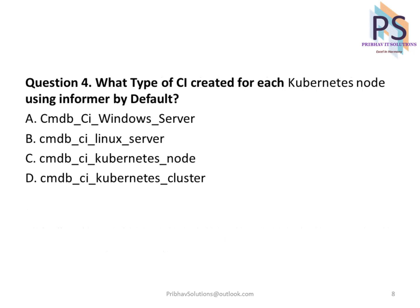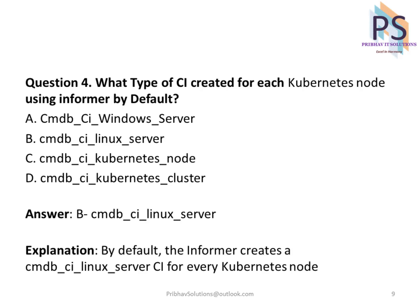Question 4: What type of CI is created for each Kubernetes node using Informer by default? A. cmdb-ci-windows-server. B. cmdb-ci-linux-server. C. cmdb-ci-kubernetes-node. D. cmdb-ci-kubernetes-cluster. Answer: B. cmdb-ci-linux-server.